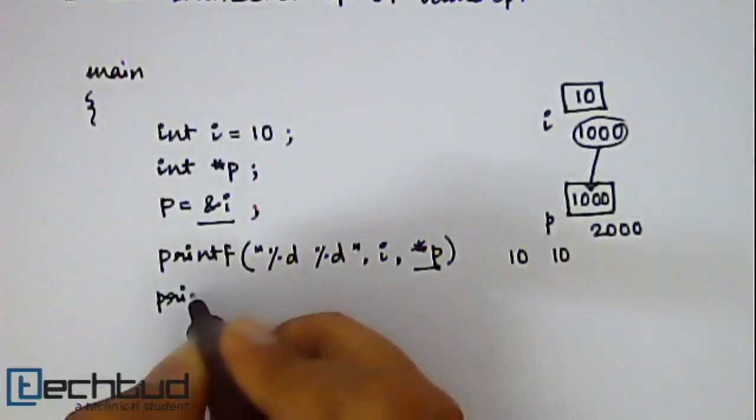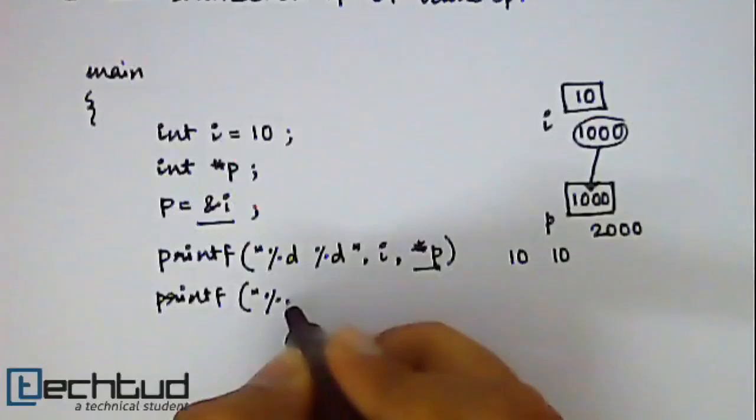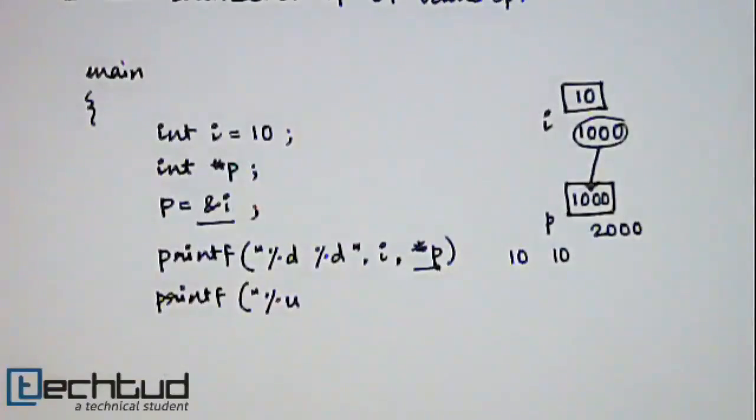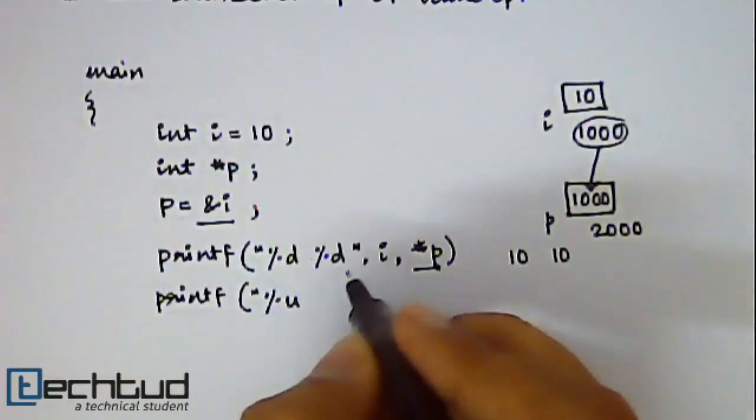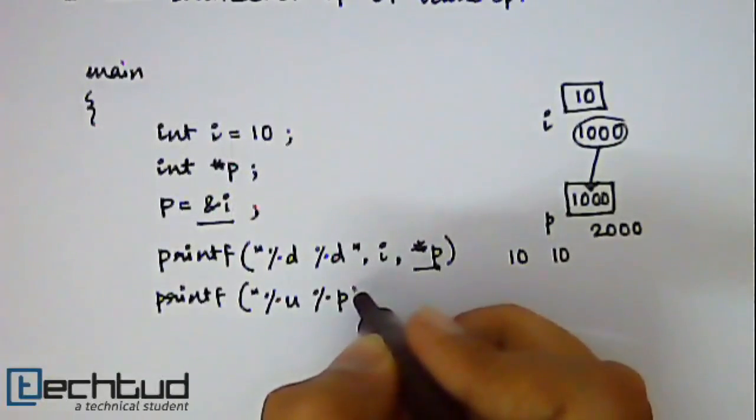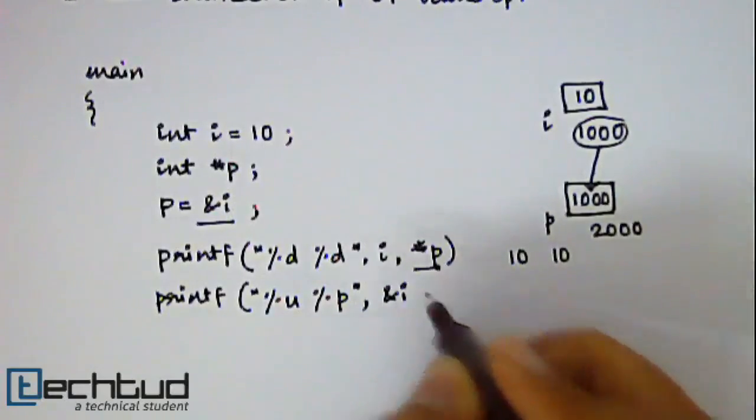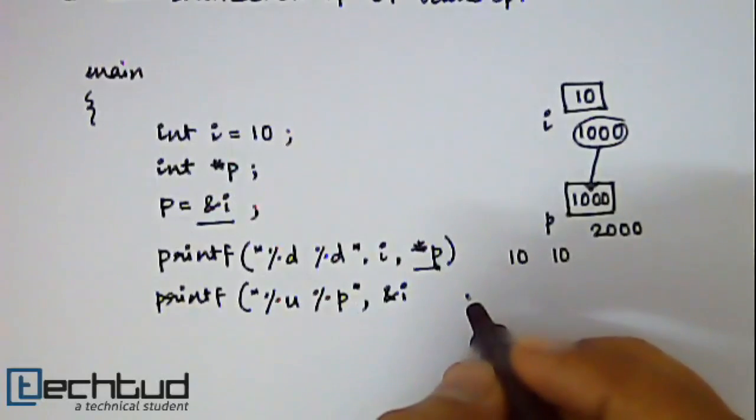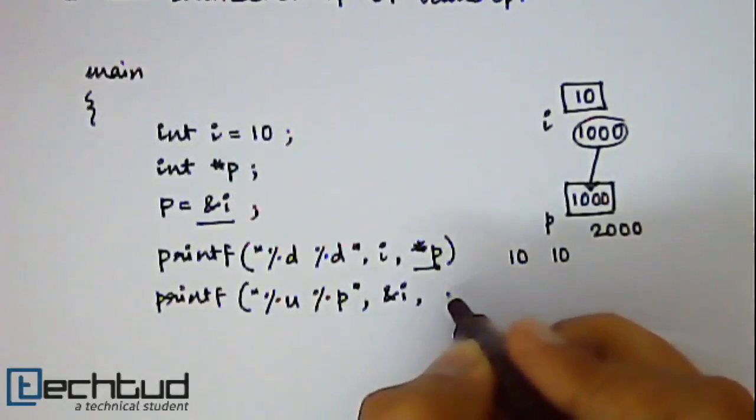Now next print statement. %u to print unsigned integer and basically pointer variable stores unsigned integer value. %p which is used for printing hexadecimal value. And now you write ampersand i. I have already mentioned that ampersand i means address of i which is 1000. And you write the p.